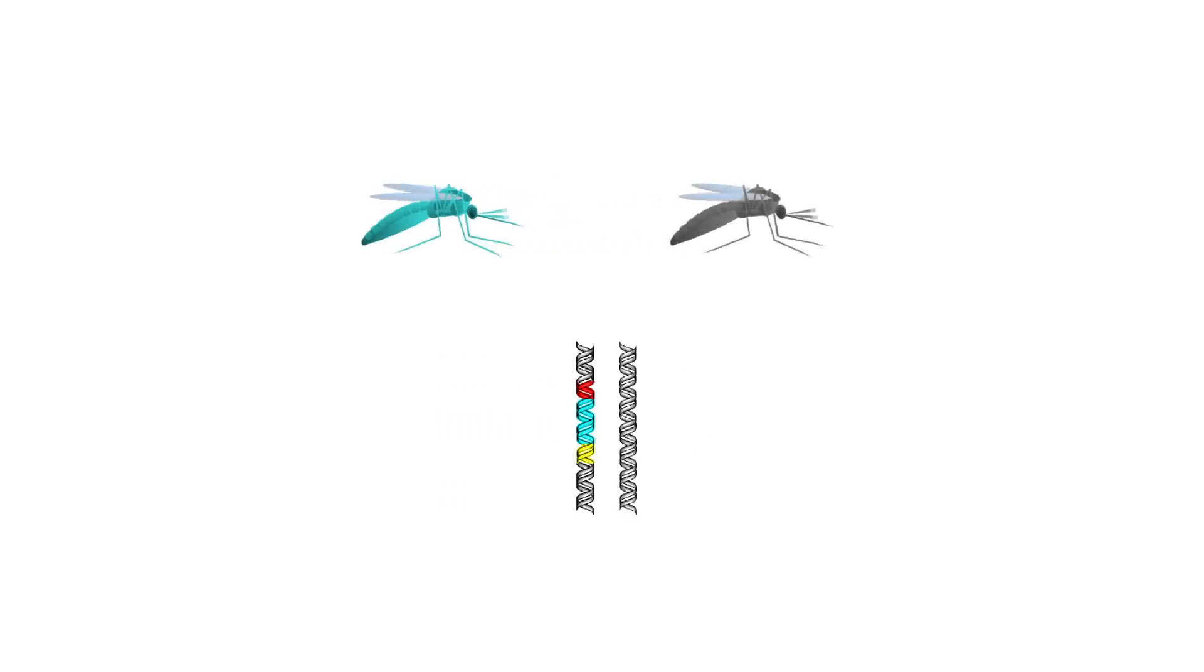When passed to offspring, the guide RNAs direct Cas9 to cut the wild type version of the gene inherited from the wild type parent. The cell then copies both the altered gene and the drive when it repairs the damage.